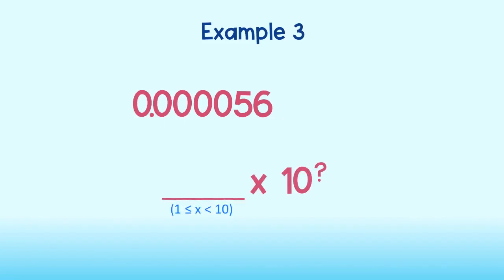It is also common to write very small numbers such as 0.000056 in scientific notation. Again, the first factor of our final number written in scientific notation will be a number greater than or equal to 1 but less than 10 times some power of 10. Right now, we can multiply by 10 to the 0 power without changing the number.